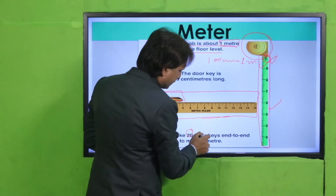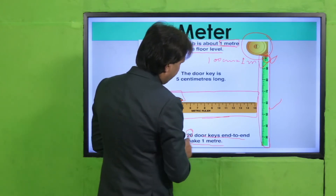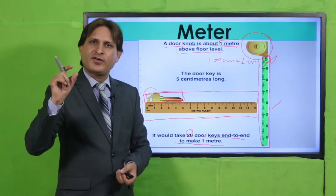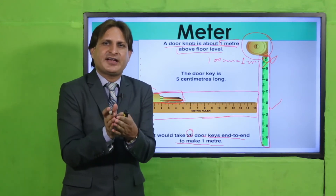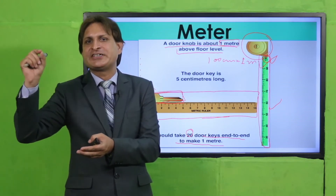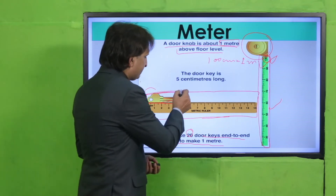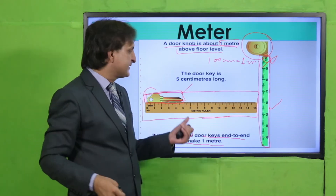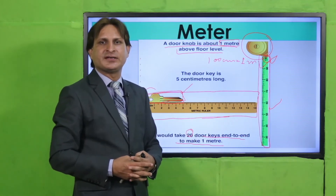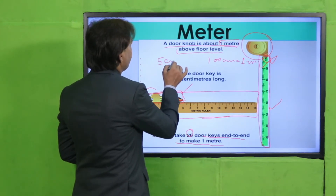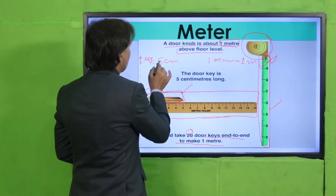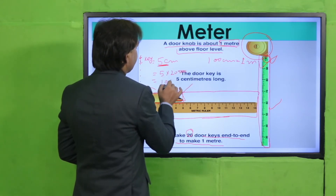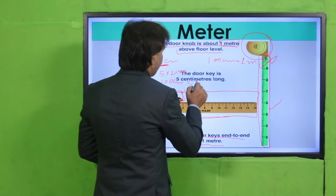A door knob is about 1 meter above the floor level. Similarly, it would take 20 keys end to end to make 1 meter — means ek key ki length 5 cm hai. Toh 1 meter tak pahunchne ke liye kitni keys use karunga? 20 keys honge — means 5 cm × 20 = 100 cm, that is equal to 1 meter.